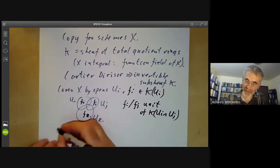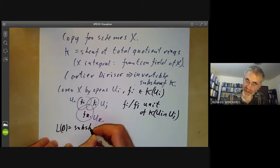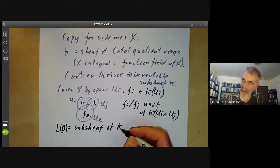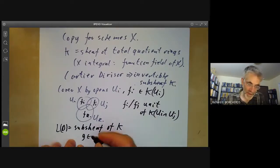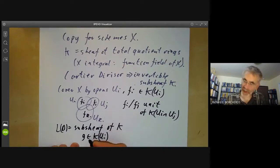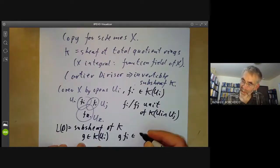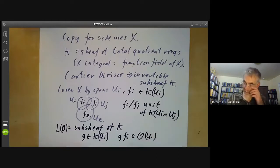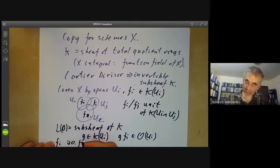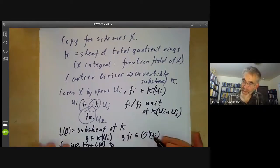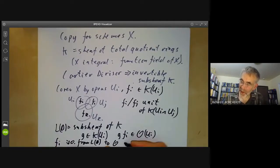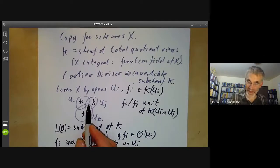We take the subsheaf L(u) to be the subsheaf of K of functions g given by functions in K on u_i such that g times f_i is regular on u_i. So if f_i has a zero of order three, this means roughly that g is allowed to have a pole of order three. And f_i gives an isomorphism from L(d) to the sheaf of regular functions on u_i. So locally the sheaf is isomorphic to regular functions, making it an invertible sheaf.